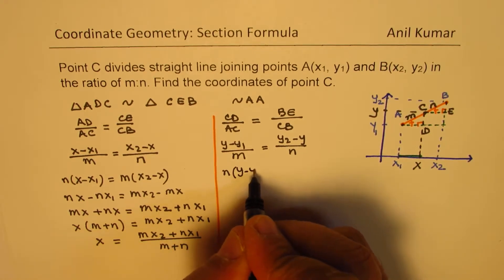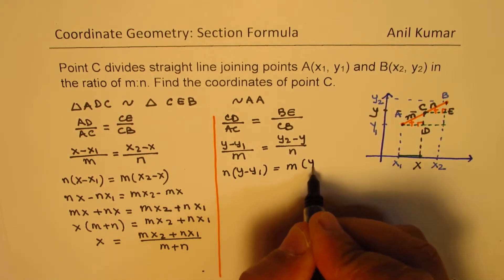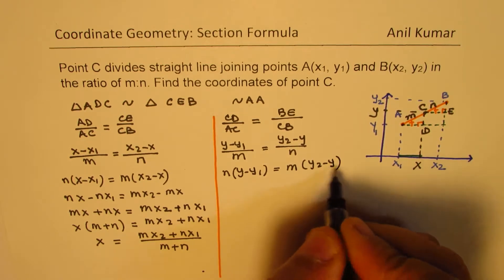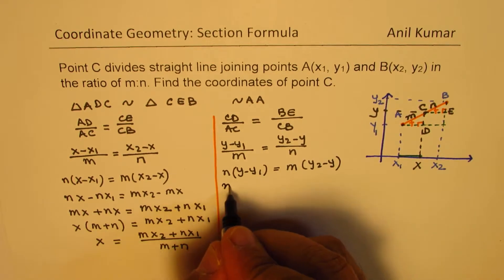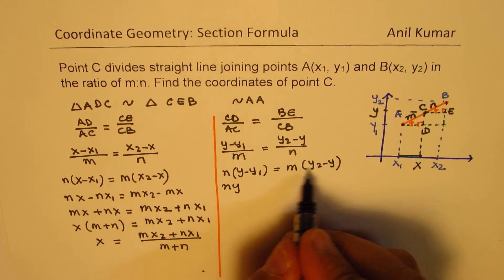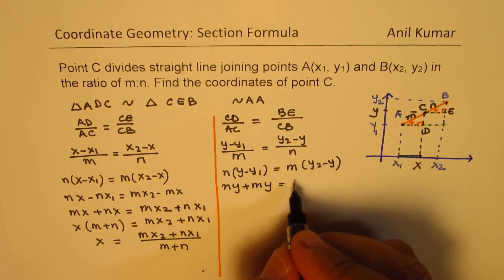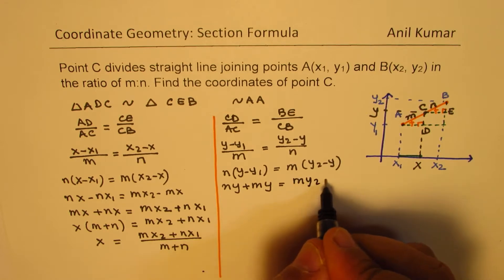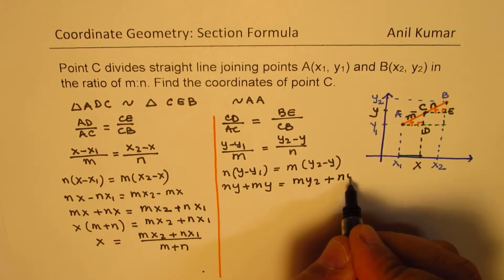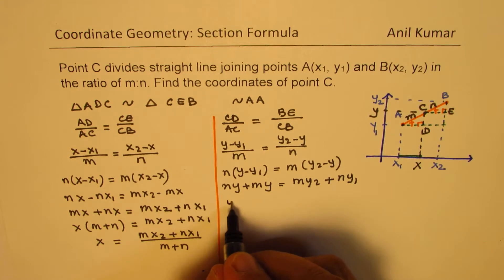n(y minus y1) equals to m times (y2 minus y). Bring the y's together, we get ny plus my equals to my2 plus ny1.